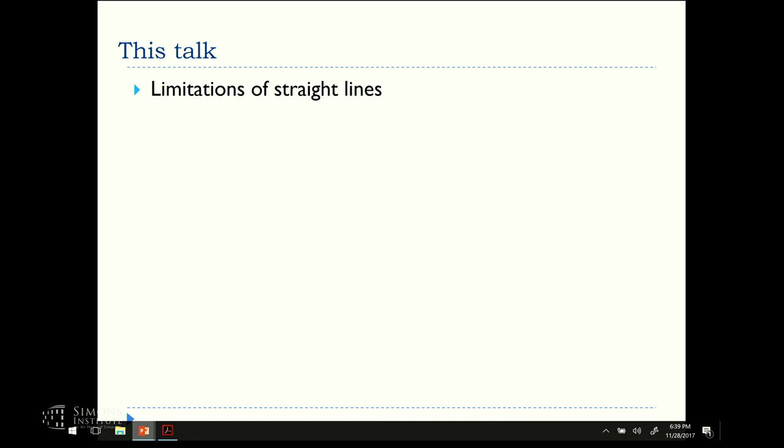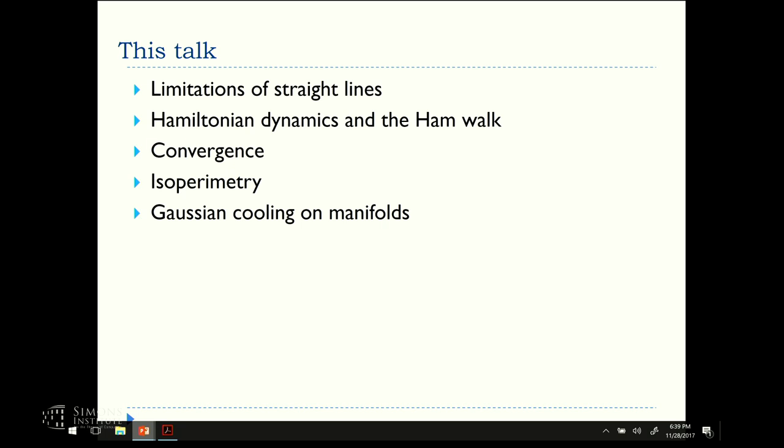So in this talk, what I'd like to cover is the limitations of traveling on straight lines, Hamiltonian dynamics, and this walk, we can call the ham walk, convergence of this process, the role of isoperimetry in this convergence, and what we can prove and not prove, and how we do volume using this in this new setting.